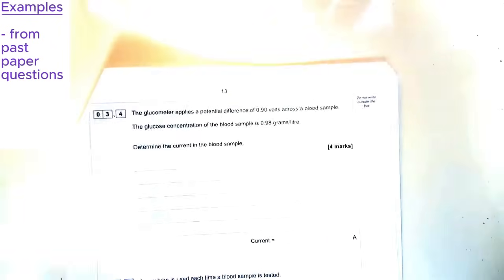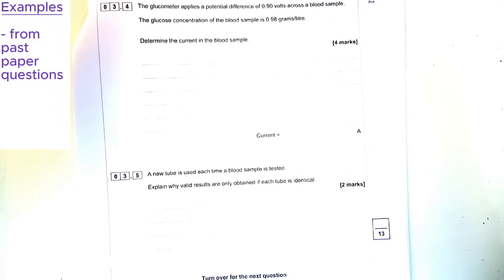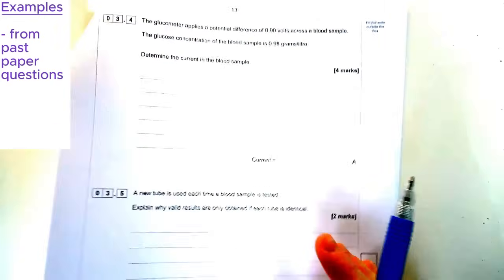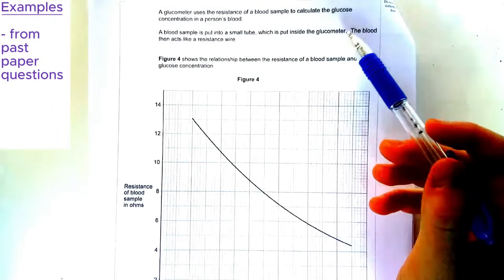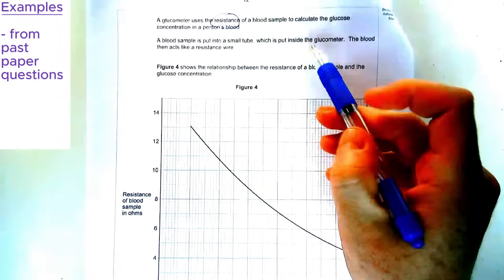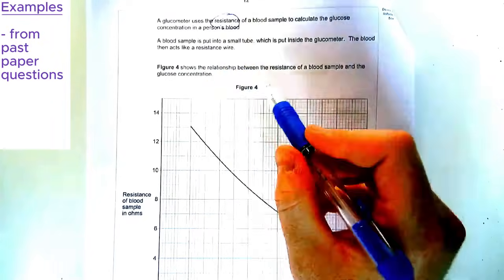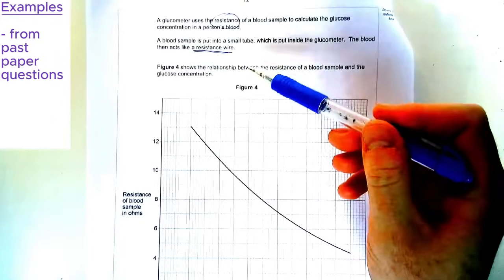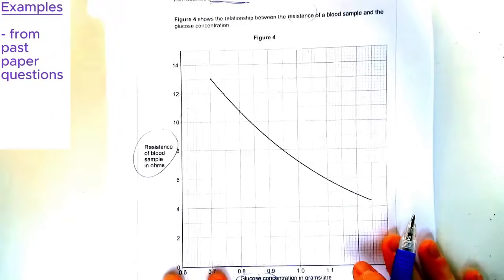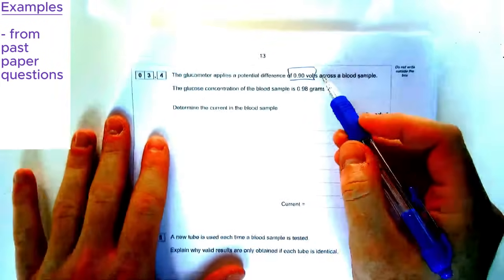The next question we're going to have a look at is from Combined Science this time, from June 2020, and it's talking about glucometer and glucose, which sounds like a biology question. I know this question confused people a lot when it came out. You've got this massive graph on this side here. So it says a glucometer uses the resistance, that sounds physics-y, of a blood sample to calculate glucose concentration in blood. A blood sample is put into a small tube, put into a glucometer, blood acts as a resistance wire, and it shows the graph shows the relationship between resistance and glucose. We've got glucose on the x-axis, and we've got the resistance on the y-axis. Now, the question says the glucometer applies a potential difference of 0.9 volts across a blood sample, and the concentration is 0.98 grams a litre.